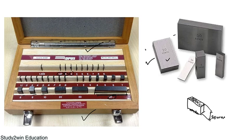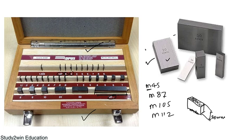There are different slip gauge sets like M45, M87, M105, and M112. The 'M' stands for metric, meaning the slip gauges in the box are in millimetres, and the number indicates how many slip gauges are in the box. So in an M45 slip gauge set there are 45 slip gauges. Similarly, in an M87 slip gauge set there will be 87 slip gauges of different sizes. The same applies for M105 and M112.